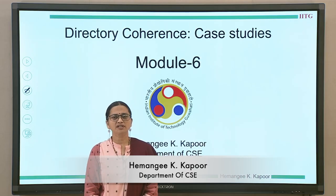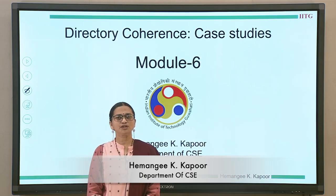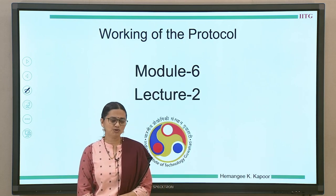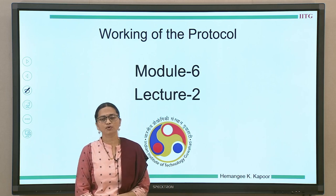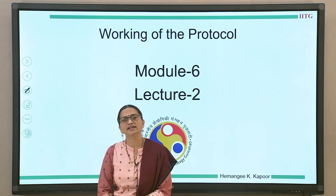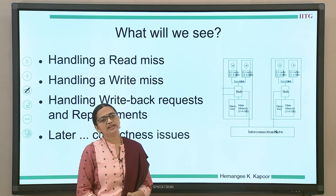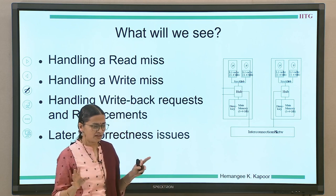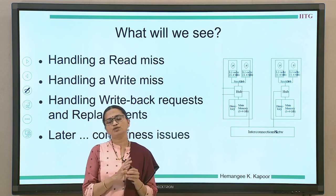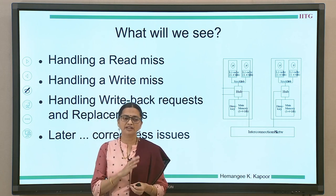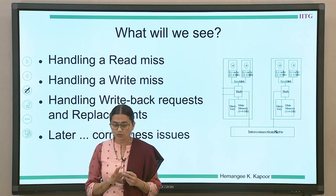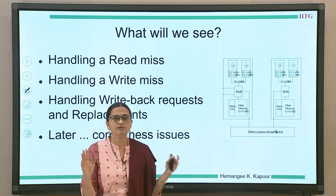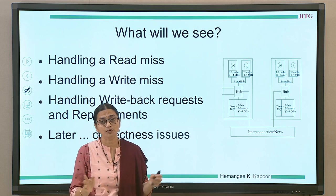Hello everyone. We are doing module 6 on Directory Coherence Case Studies. This is lecture number 2 in which we are going to look at the working of the protocol of the SGI Origin architecture. We have seen that there is a node which has a hub and two processors. Through the hub, it goes to the Expo router and the router connects to other routers and other nodes, forming a 1024-node type size system.